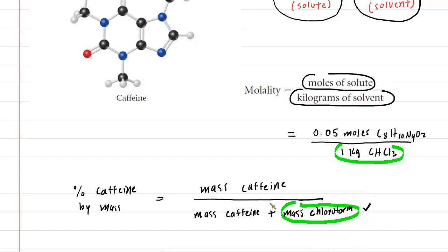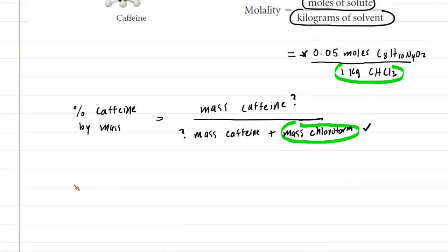We need to figure out the mass of the caffeine. That becomes our next challenge. Luckily, we have the moles of caffeine. So what we're going to do is simply grab the moles of caffeine here, and we're going to convert it into grams of caffeine. And you recall how to do that.